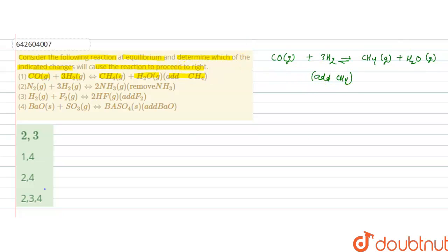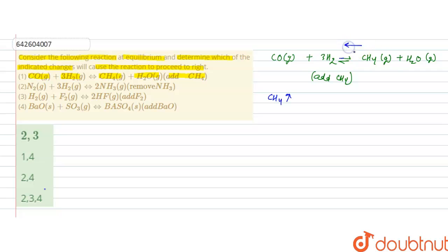If CH₄ is added, it will increase the concentration of CH₄ in the products. As CH₄ concentration increases, the equilibrium according to Le Chatelier's principle will oppose this change and try to shift the equilibrium back. It will follow the backward direction — if CH₄ concentration is more, it will react with water in the gaseous state to form more of the reactants, meaning it will go towards left.